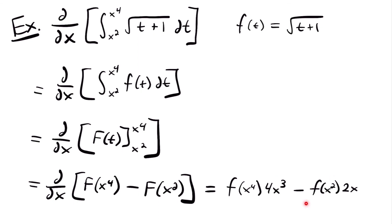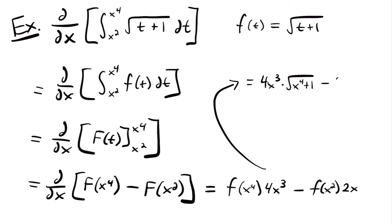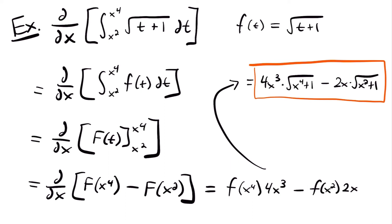For the second term: the derivative of the outside function gives small f of x squared, and we multiply by the derivative of x squared, which is 2x. Plugging in: 4x cubed times the square root of x to the fourth power plus 1, minus 2x times the square root of x squared plus 1. That is the final answer. The quick method: plug the upper bound into the function and multiply by its derivative, then subtract the lower bound plugged in multiplied by its derivative.